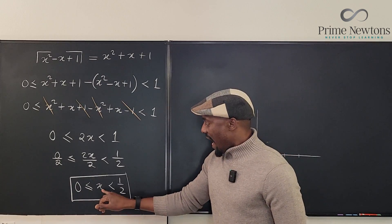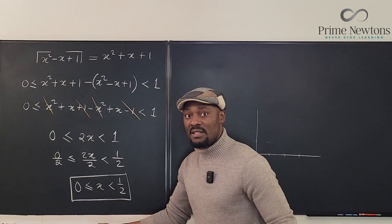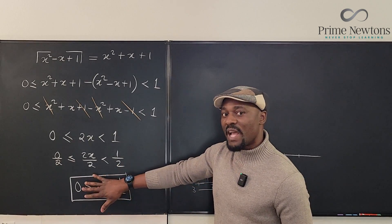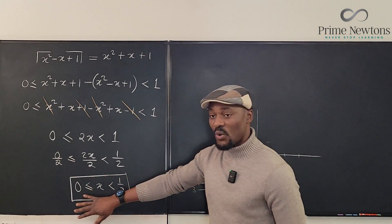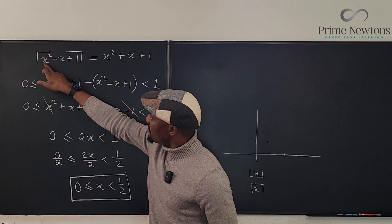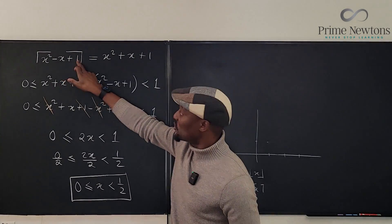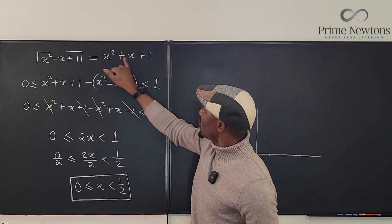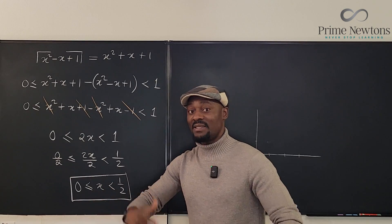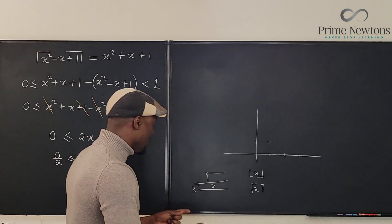This gives us two cases. x must be non-negative — either equal to 0 or greater than 0 but bounded above by 1/2. Let's check what happens if x equals 0. Plugging in 0, we get 0 + 0 + 1 = 1, so the ceiling of 1 must equal 1. And as we said, the ceiling of an integer is itself because there's no gap between it and its ceiling. So x = 0 works.